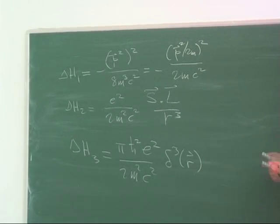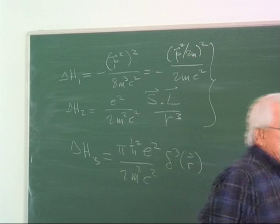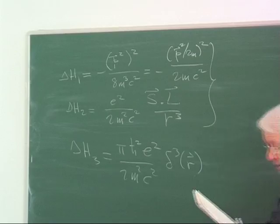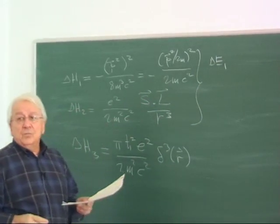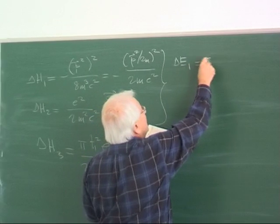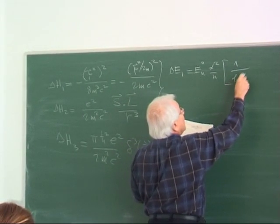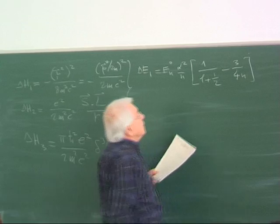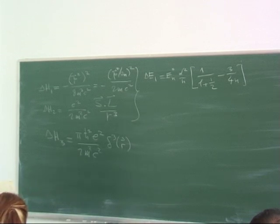Last time we computed the contributions coming from these two terms — the first-order corrections to the energy. Let me write them down since we have done the work and can just copy the result we had. The first one I denote as delta E1.